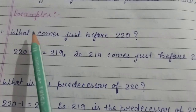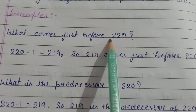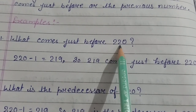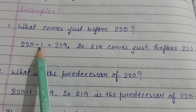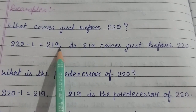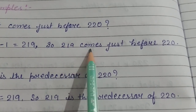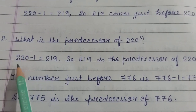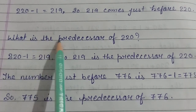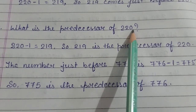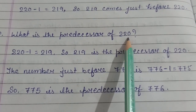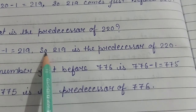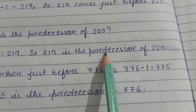Now we will see a few examples. What comes just before 220? We have to subtract 1 from 220 to get the answer. So 220 minus 1 is equal to 219. So 219 comes just before 220. Now if the question is asked: what is the predecessor of 220? We will subtract 1 from 220 and then we will get 219. So 219 is the predecessor of 220.